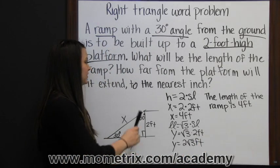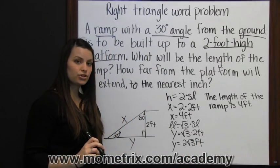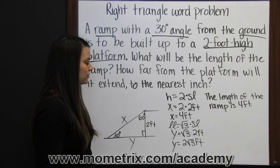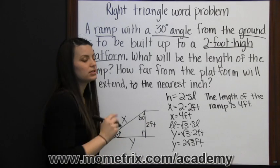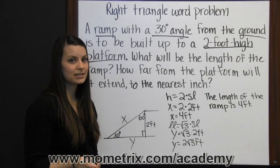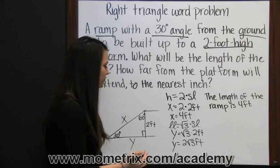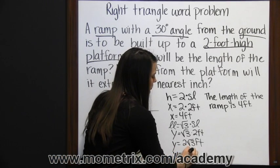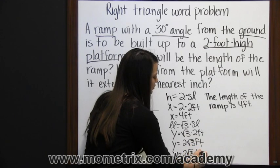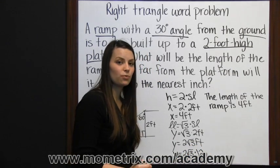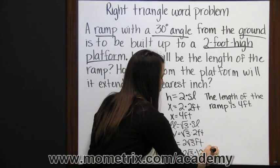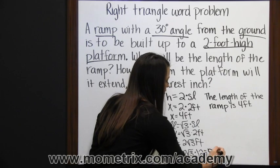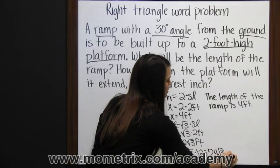They didn't ask us for the answer in feet, they asked to the nearest inch. So the first thing I'm going to do is convert two square roots of three feet into inches by multiplying by twelve. So y is two square roots of three times twelve, since there are twelve inches and one foot, which is twenty-four square roots of three inches.